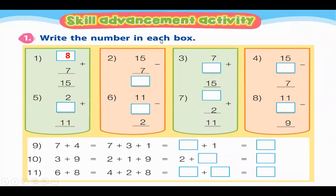Next we have number 2: 15 minus 7. What is 15 minus 7? 15 minus 7 is 8. So that means if you subtract 7 from 15, the result is 8.